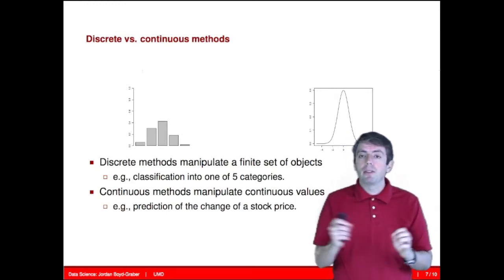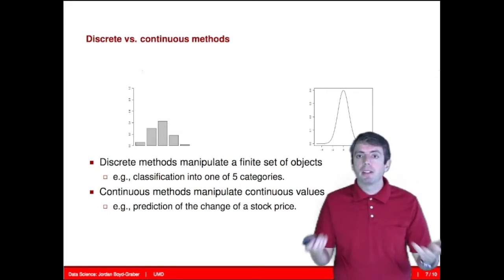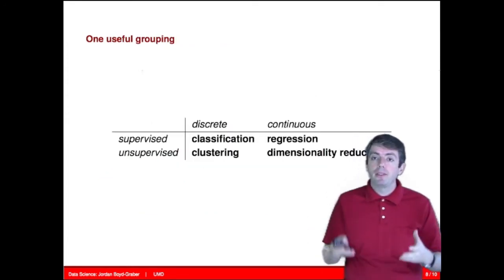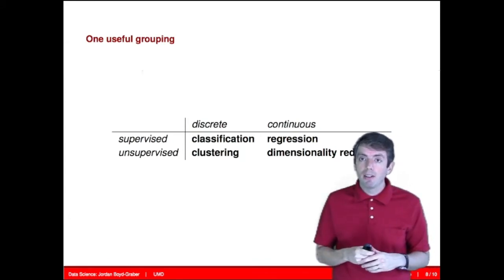If you can assign a value on a number line, you have continuous data. Other examples of continuous data are, for example, stock prices.